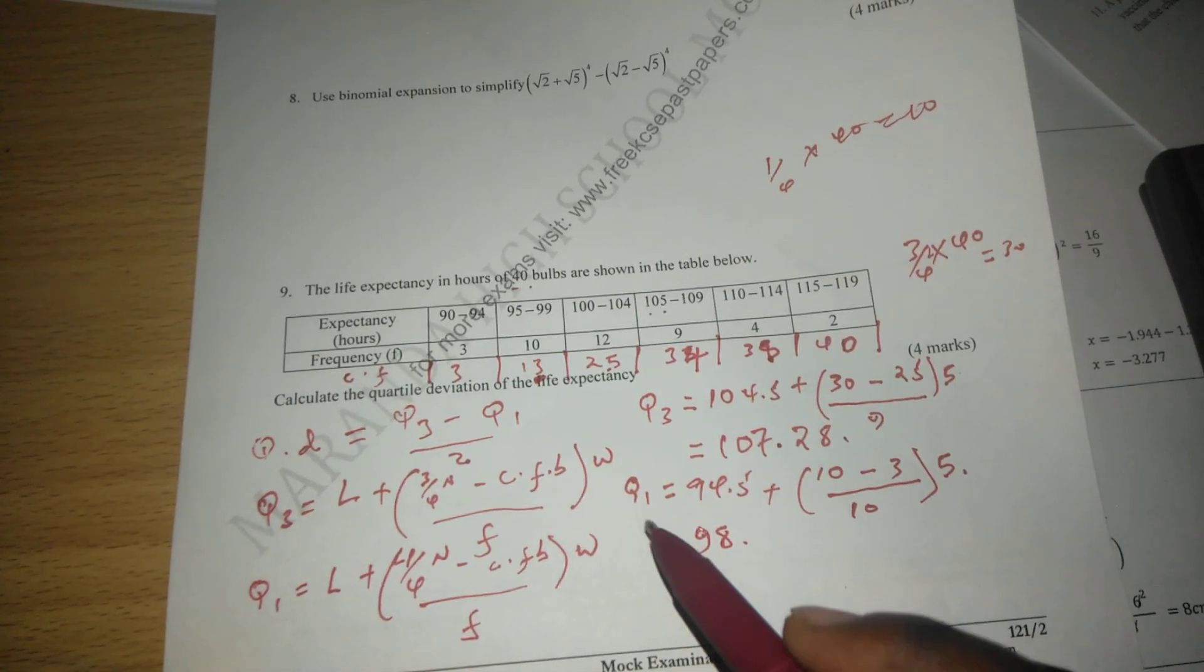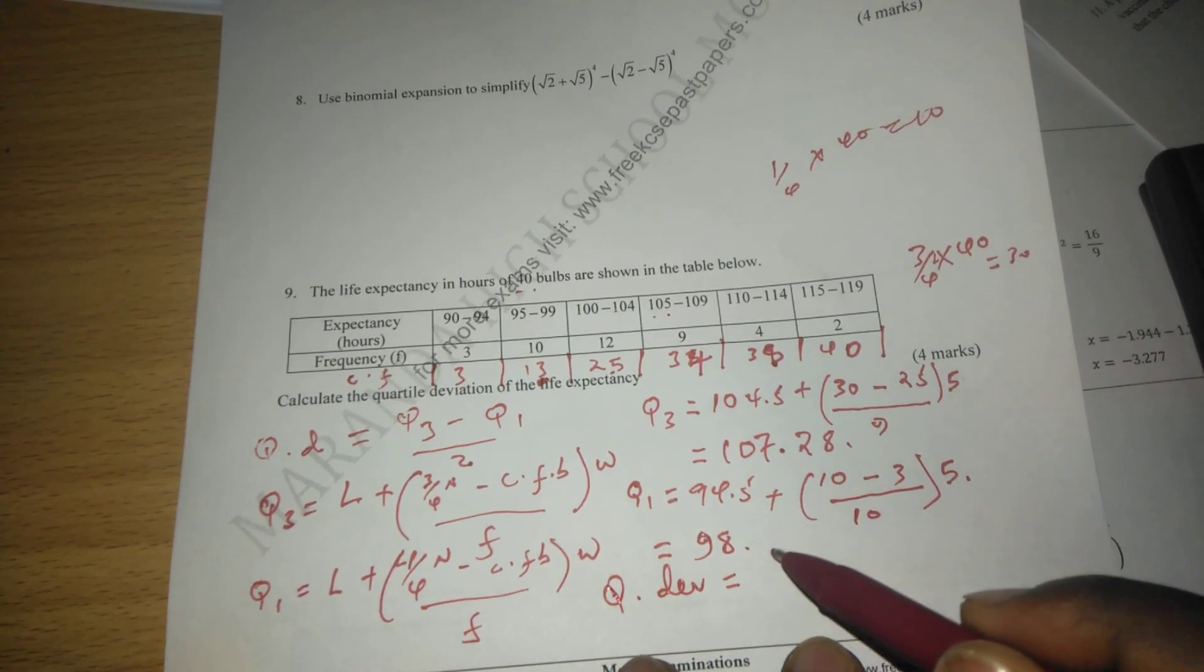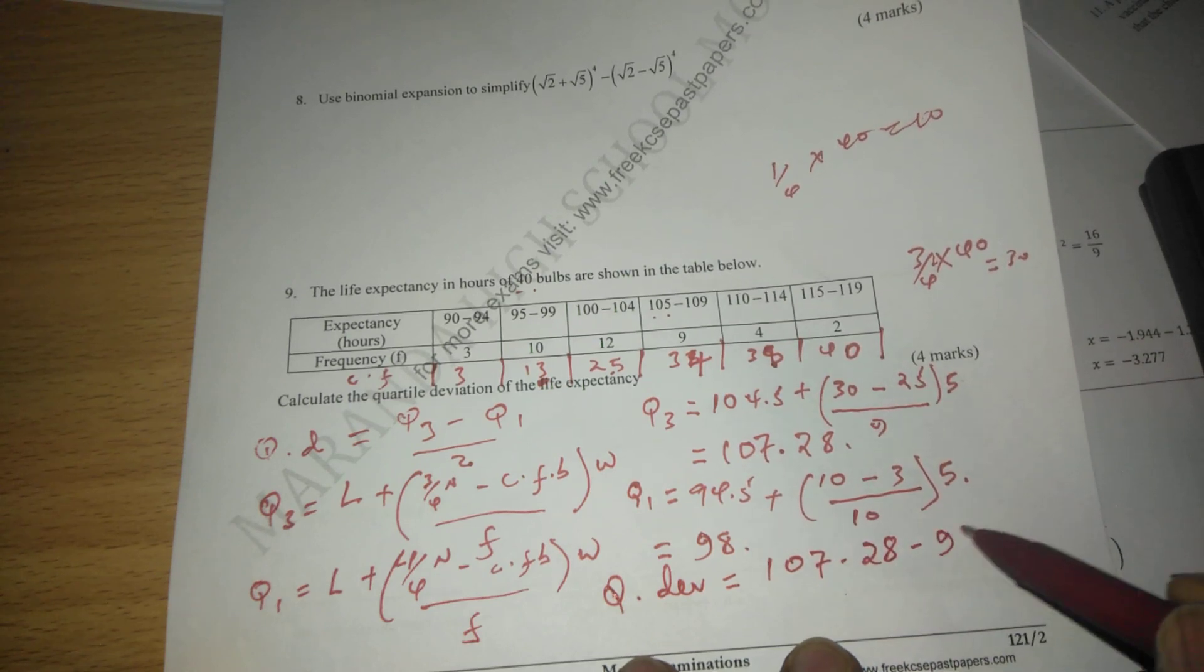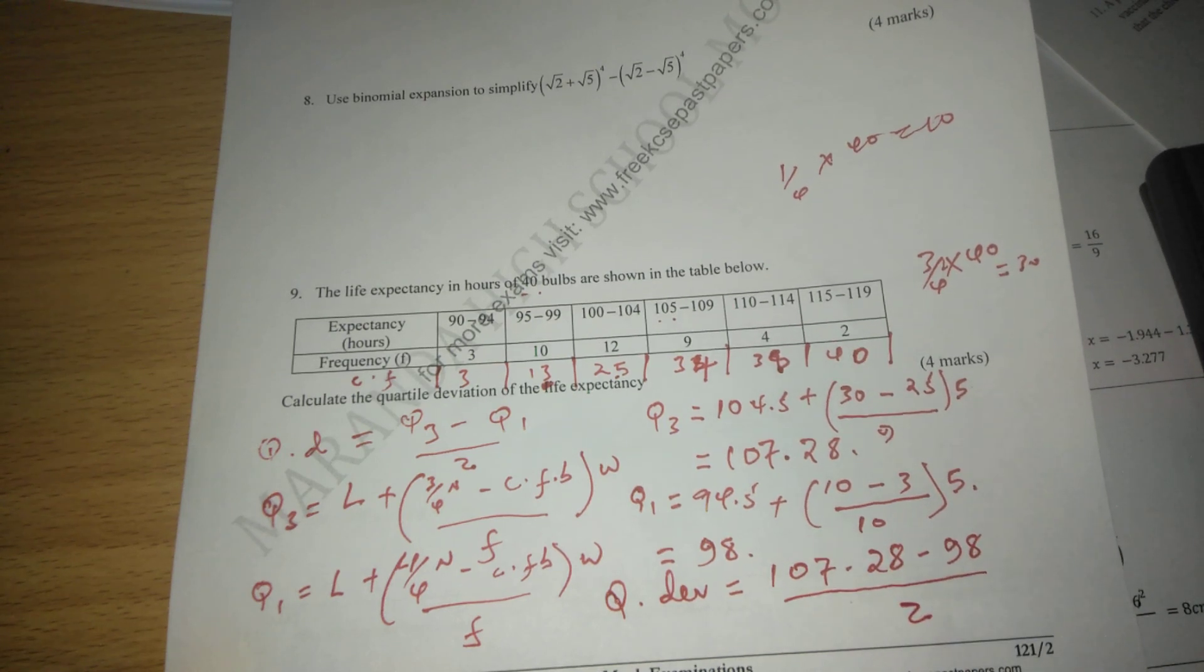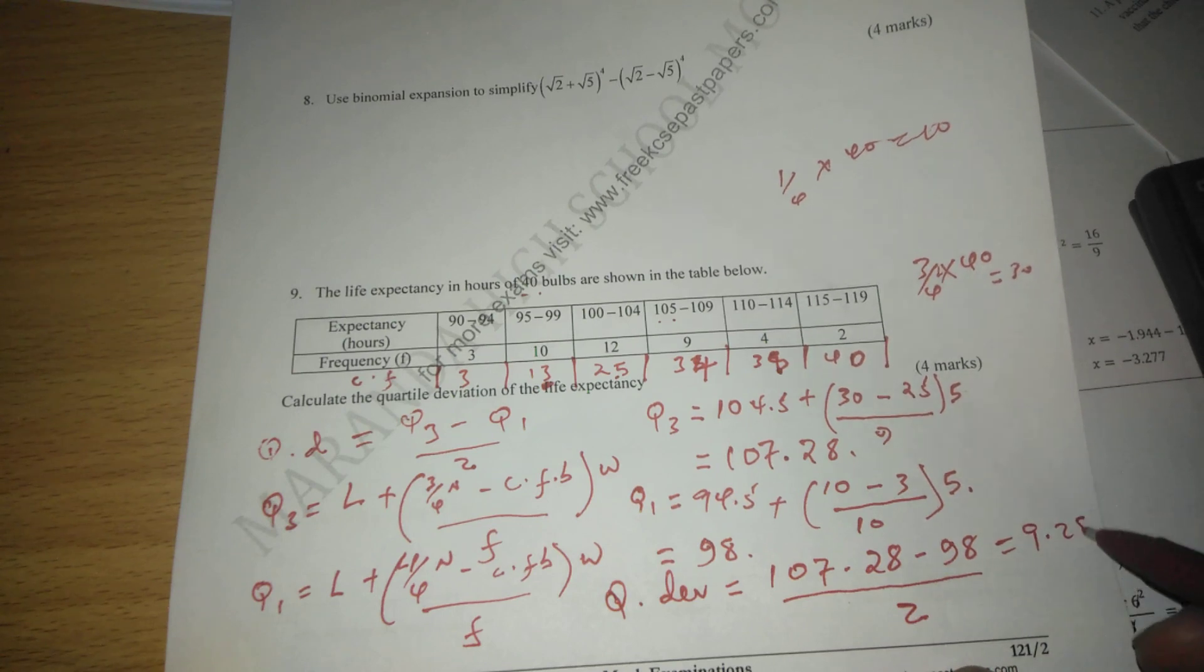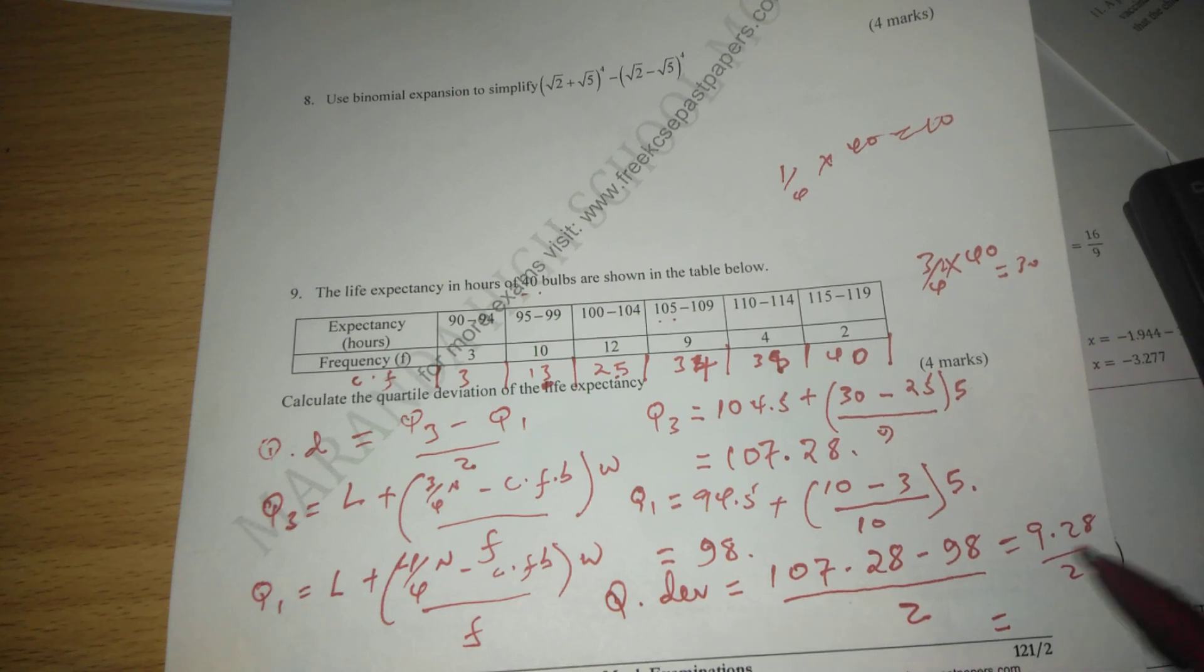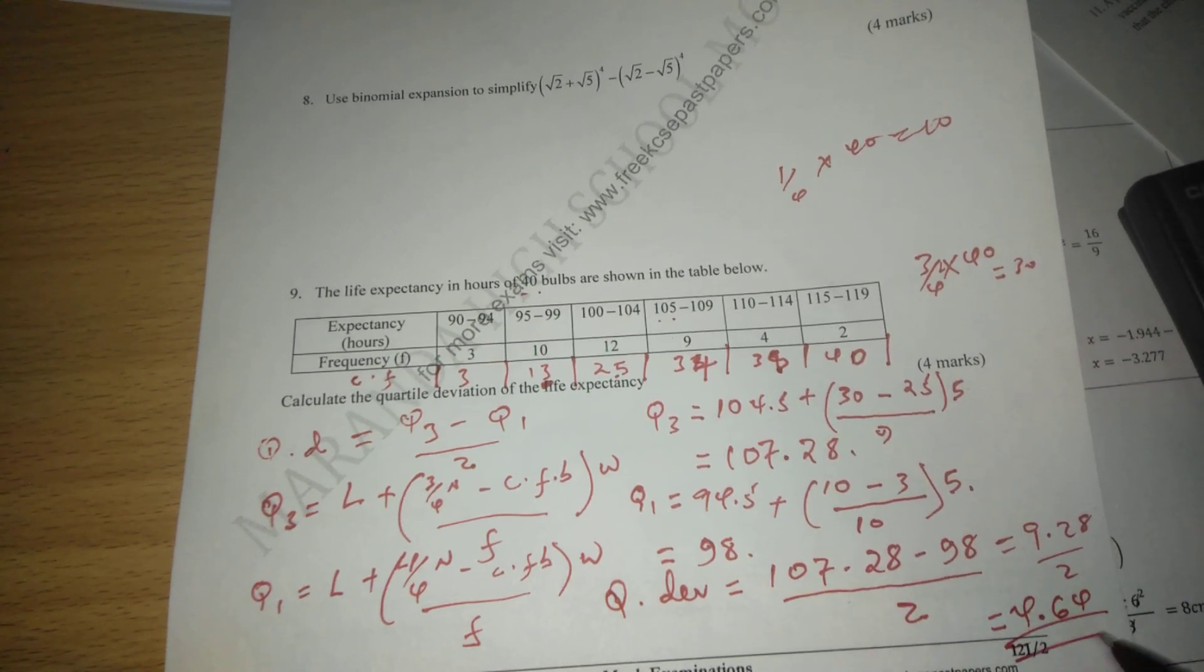We said for us to get quartile deviation, then we should get Q3 minus Q1, and we divide with 2, such that 107.28 minus 98, then we divide by 2, we get 9, first of all, 9.28, and when we divide by 2, we will land at 4.64, three significant figures.